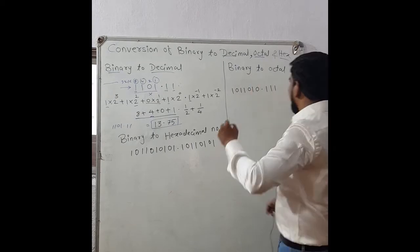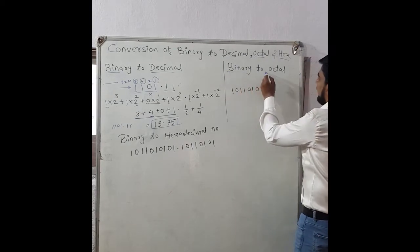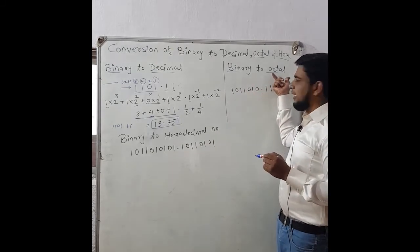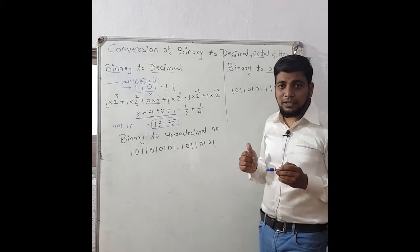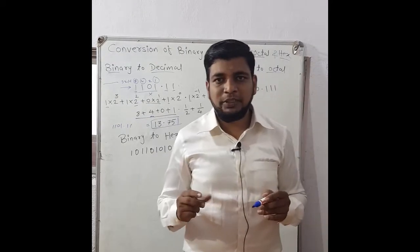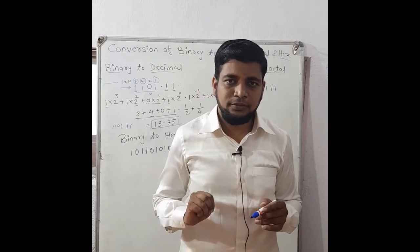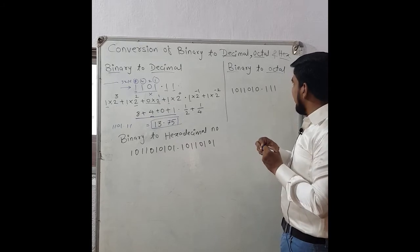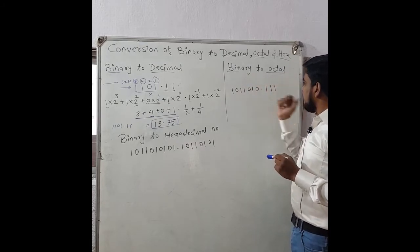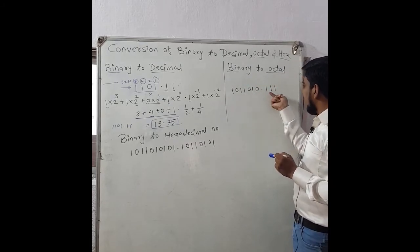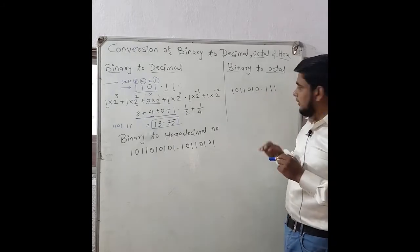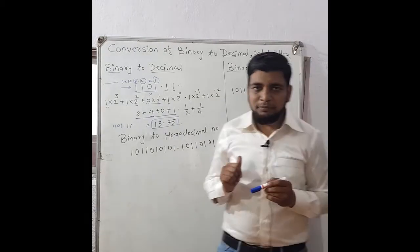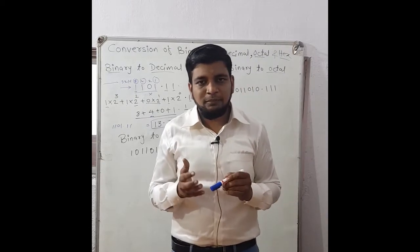Next we will see binary number to octal number — how to convert. If a binary number is given and we need to convert it to its octal equivalent, we know that octal numbers are valid from 0 to 7, having 8 possible combinations. So if a binary number with a fraction is given, we have to convert it to octal form.